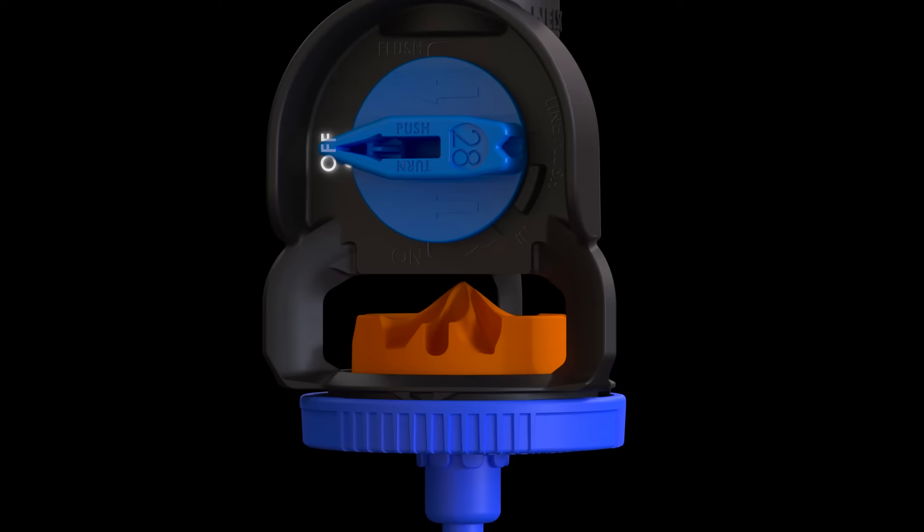Turn off for improved water management and ease of maintenance. Use the flush mode for the easiest nozzle cleaning on the market. Line flush provides a higher velocity flush of the drop tube and pressure regulator.